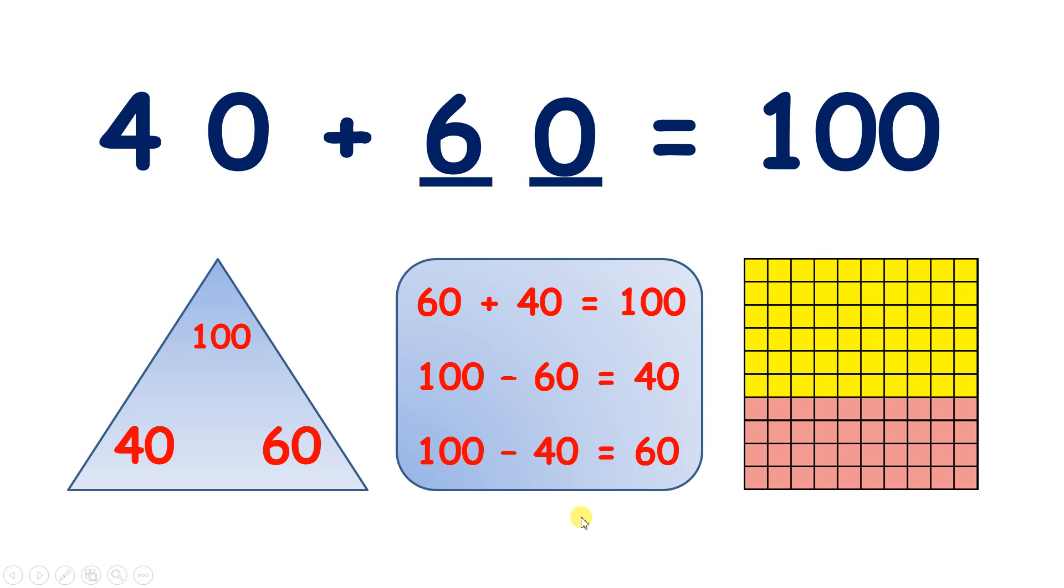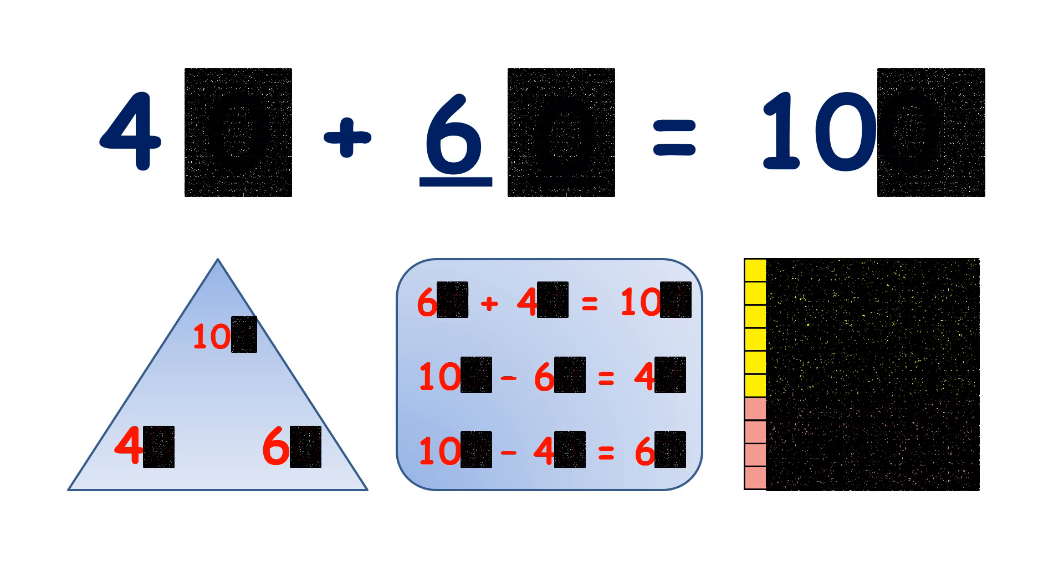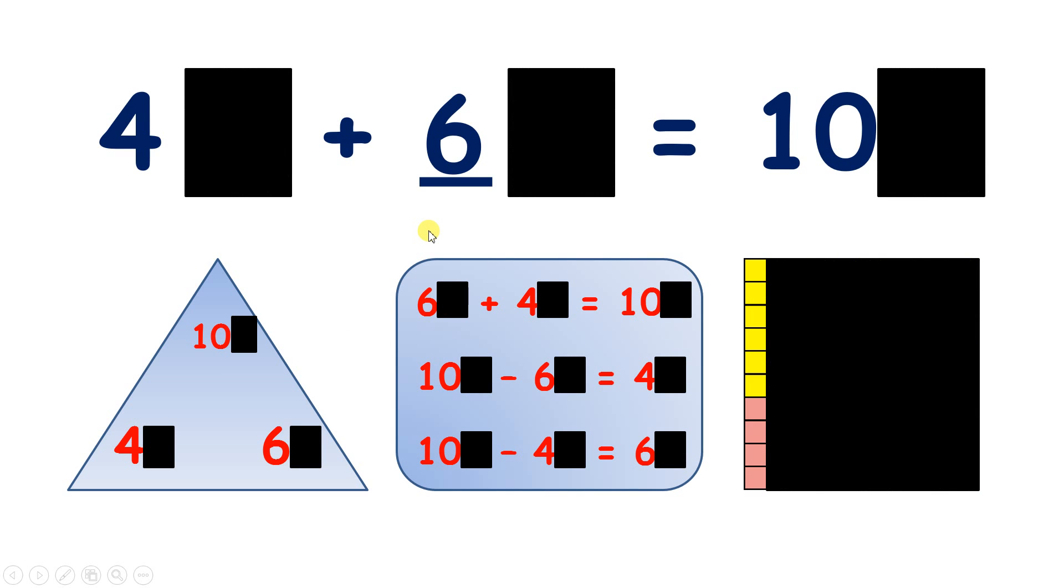Now we're looking at number bonds to 100, but perhaps you have noticed a similarity with number bonds to 10. So 4 add 6 makes 10, and if you divide everything here by 10, or take off the 0, as I've done here, you can see that we have all the number facts here for a number bond to 10.